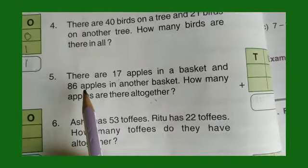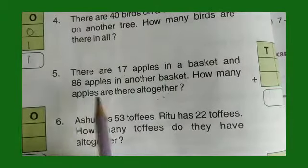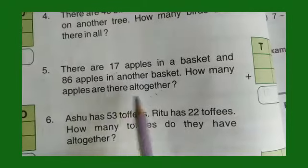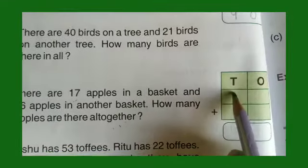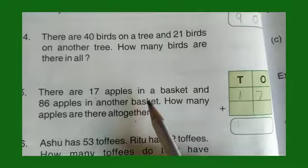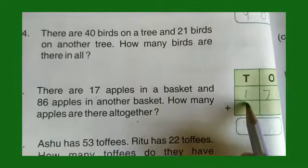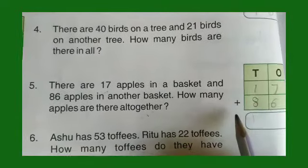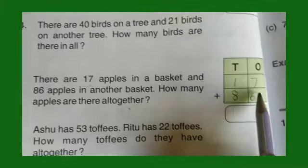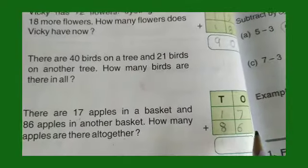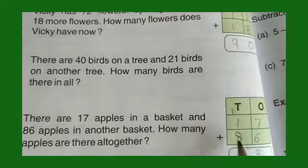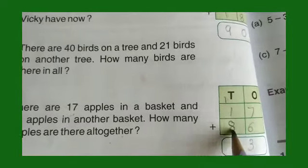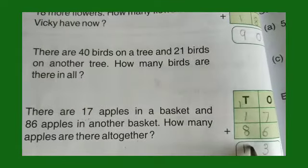Number 5: There are 17 apples in a basket and 86 apples in another basket. How many apples are there altogether? We write 17 and 86. 7 plus 6 is 13, so we write 3 and carry 1 to the tens house. The bigger number is 8; 8 plus 1 is 9, plus 1 carried is 10. So we write down 103 altogether.